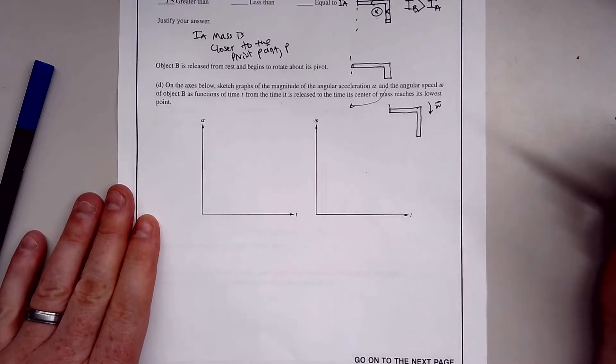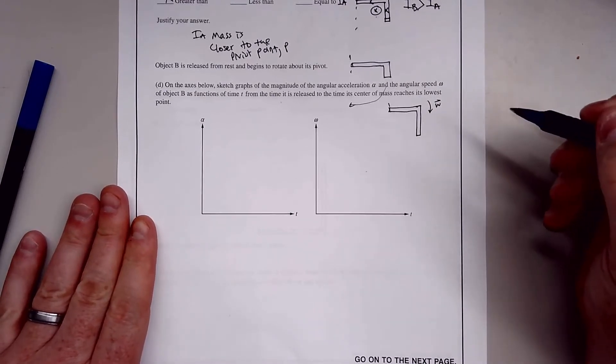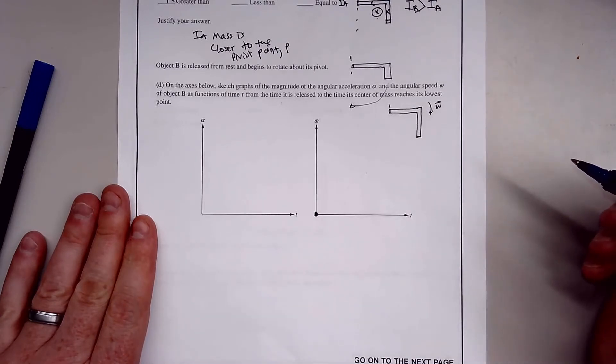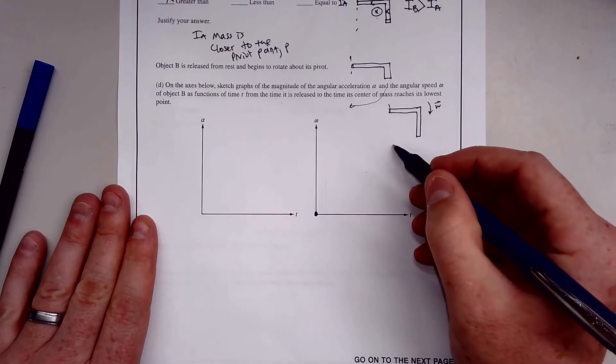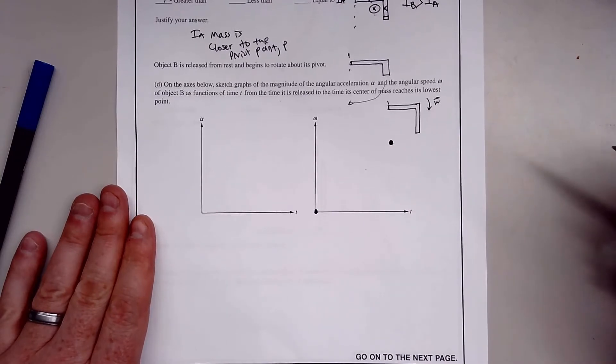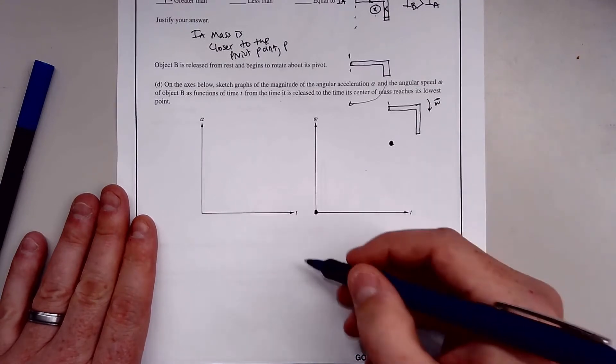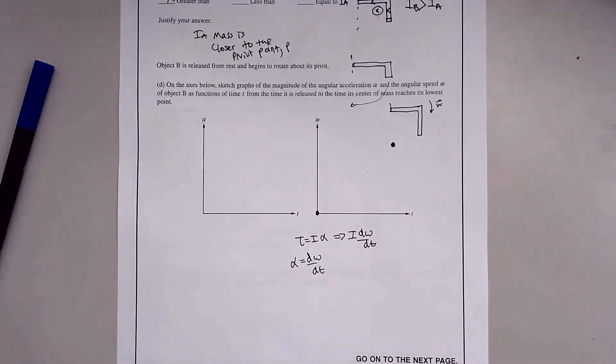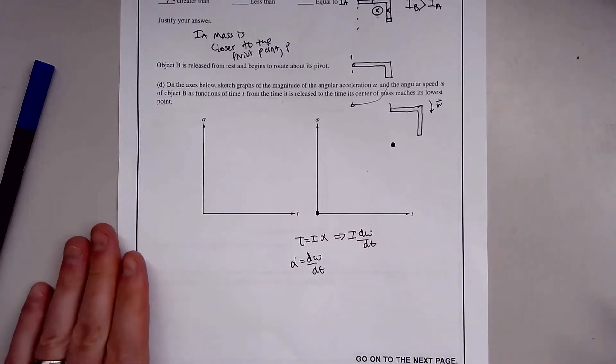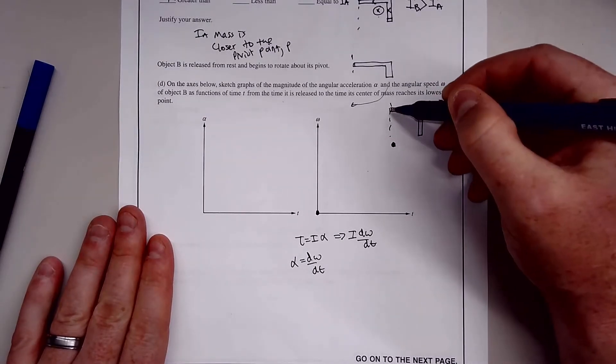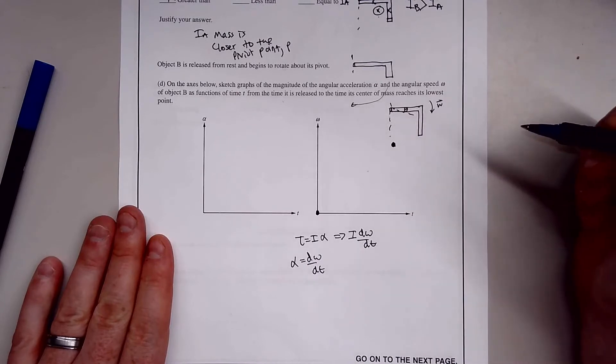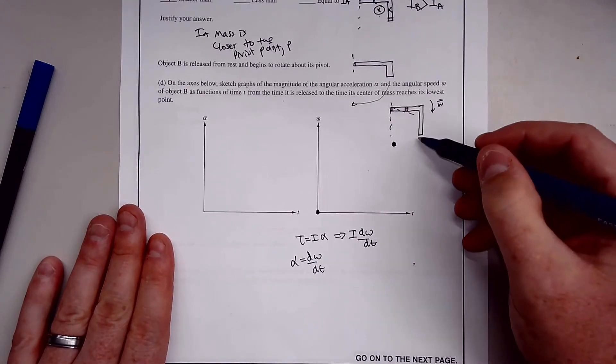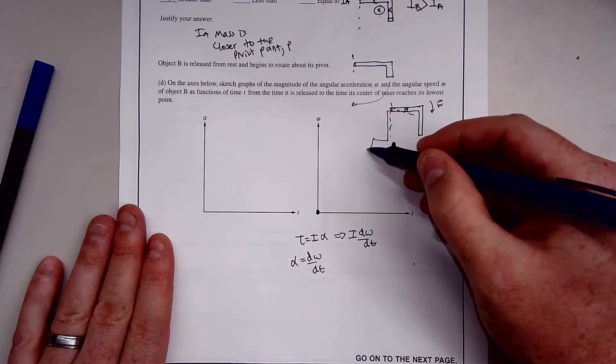It's going to pick up to some angular velocity here. We know that torque equals I alpha, and alpha is dω/dt. So you can rewrite torque as I dω/dt. As this object swings and reaches the bottom, it's going to slowly increase. Then it stops right here because as it gains more potential energy, it's got to slow back down and come back up to zero.